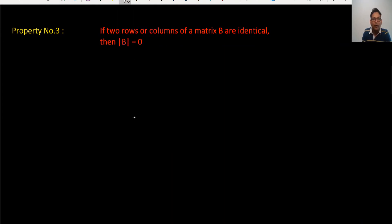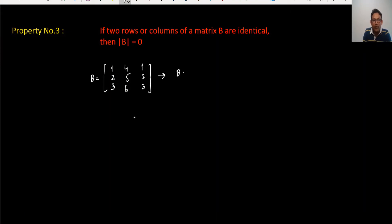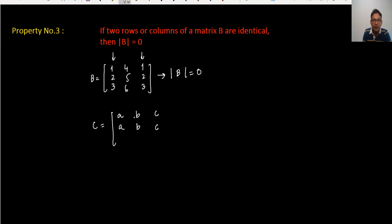Property 3: when two rows or two columns are identical, the determinant is zero. For example, matrix [1 2 3 / 4 5 6 / 1 2 3] has the first and third columns identical, so its determinant is zero. Similarly, if matrix C has two identical rows such as [a b c / a b c / x y z], then the determinant of C is also zero.